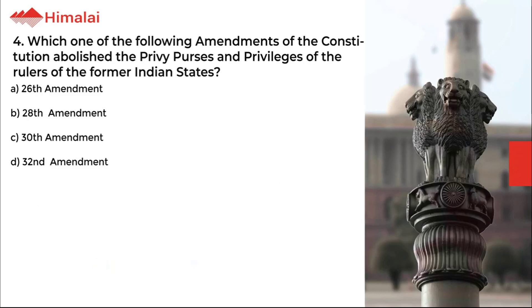Question number 4. Which one of the following amendments of the Constitution abolished the privy purses and privileges of the rulers of the former Indian states? a. 26th amendment, b. 28th amendment, c. 30th amendment, d. 32nd amendment. The correct option is A.